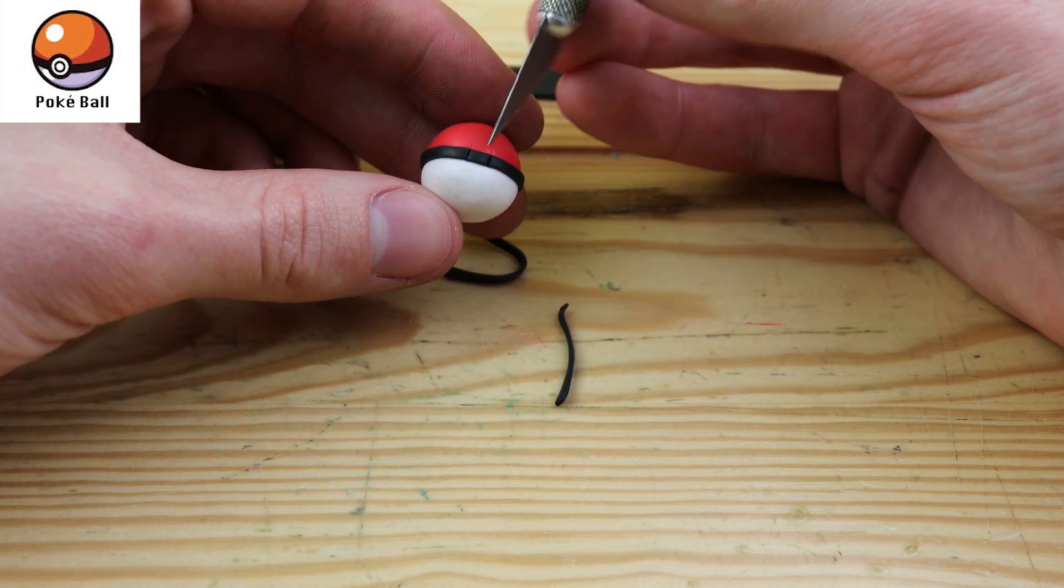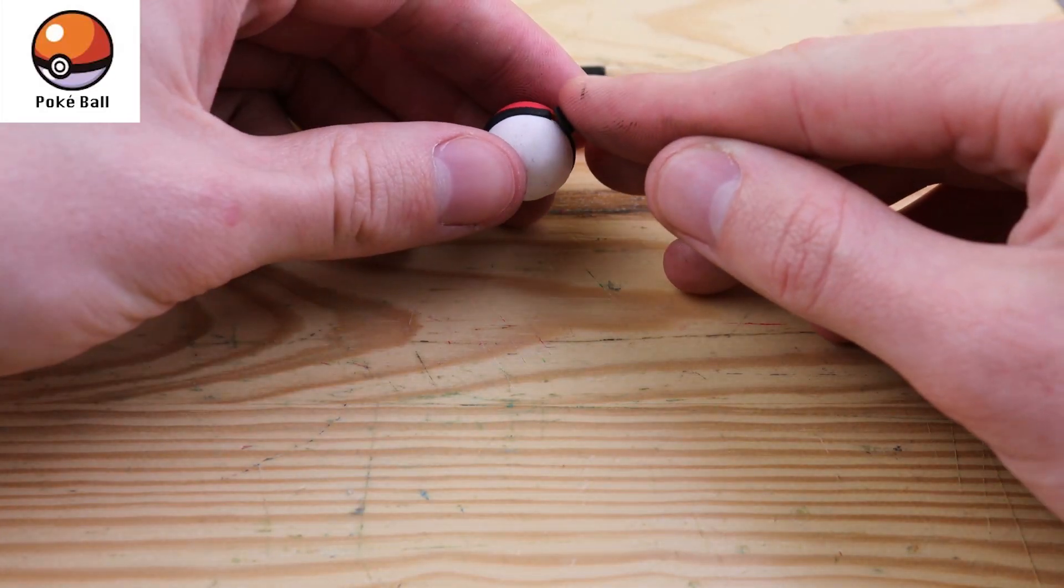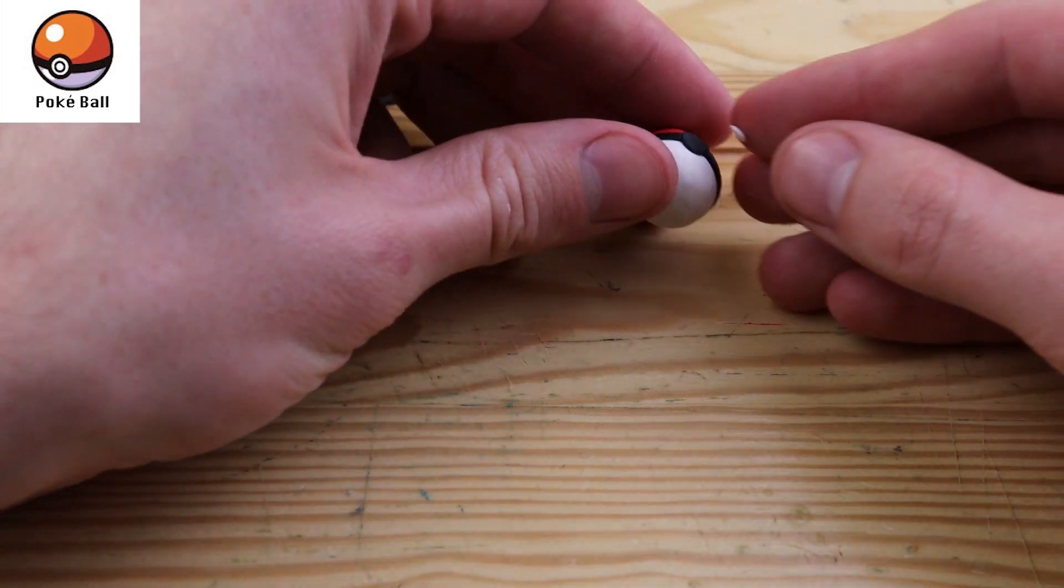And in the front we need to take out this little chunk, and this will be where we put the opening mechanism here. And on top of that we have a little white dot.